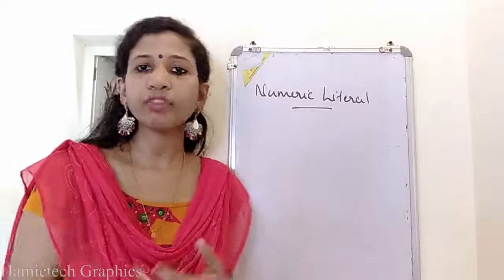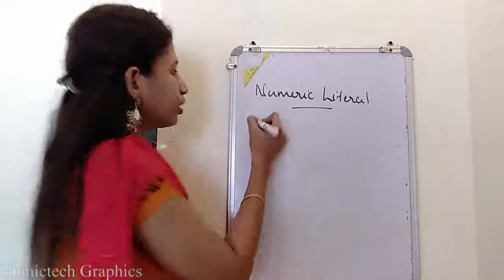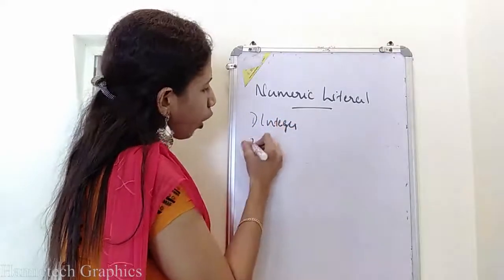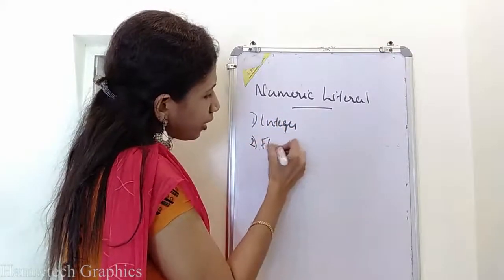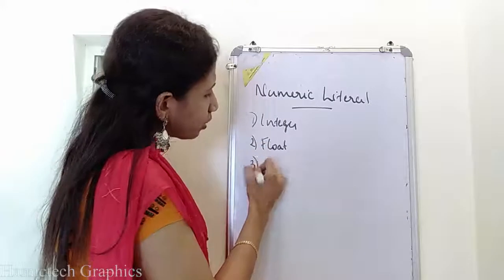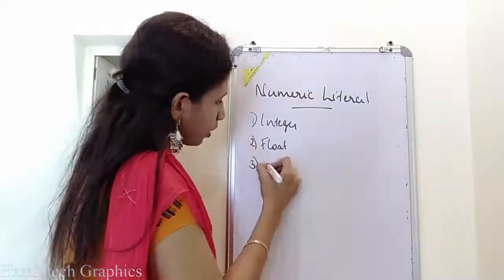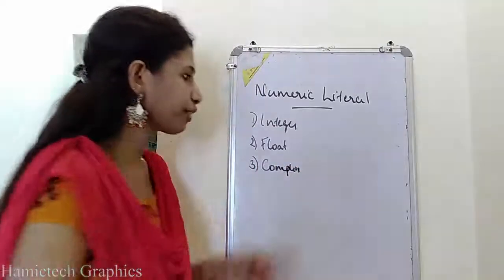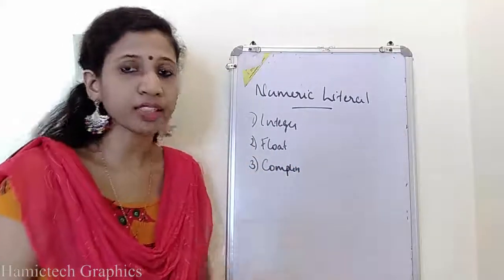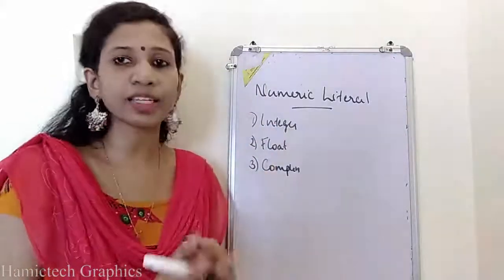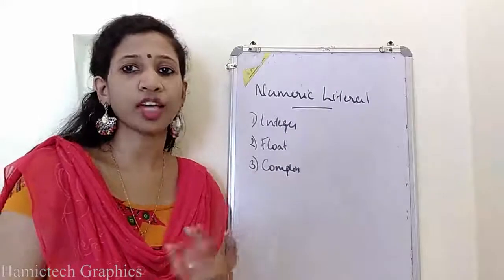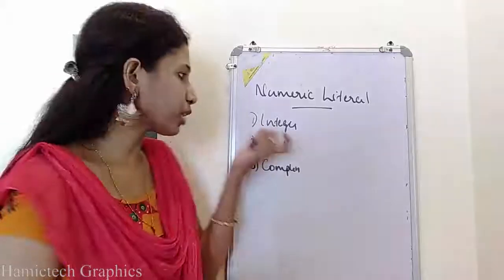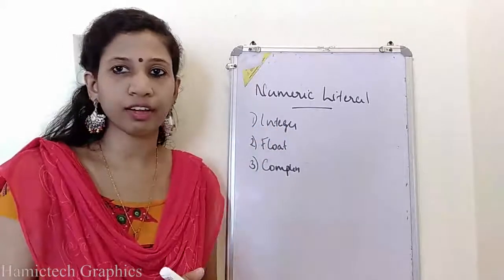Numeric literals can be further divided into integer literal, float literal, and complex. These are the three different classifications of numeric literals. The first classification is the integer — whole numbers, either positive or negative, are the values that are included in integer literals.